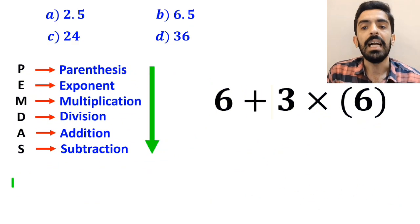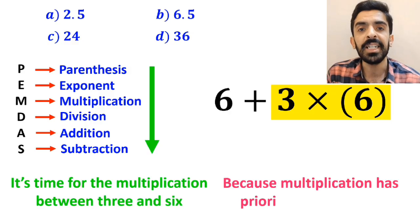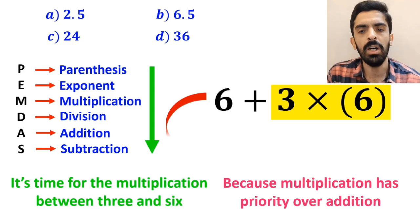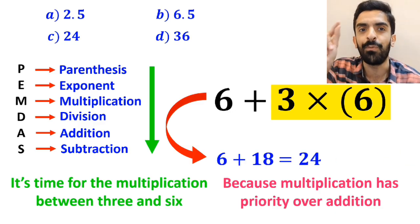And the next step, it's time for the multiplication between 3 and 6, because multiplication has priority over addition. So, instead of this expression, we can write 6 plus 18, which ultimately gives us the answer 24.